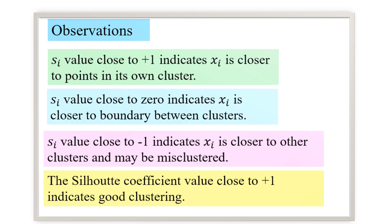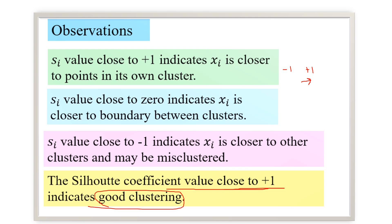A Silhouette value close to +1 indicates x_i is closer to points in its own cluster. Close to 0 means it is near the boundary. Close to −1 indicates x_i is closer to other clusters and may be misclustered. A Silhouette value close to +1 for the entire clustering shows good clustering, while −1 means the data point might have been put in the wrong cluster. We will take up an example where we get a negative SI coefficient value shortly.